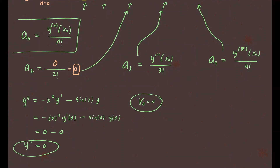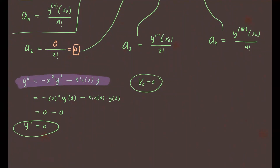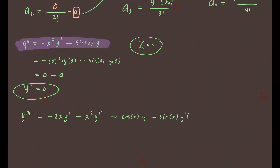We take the expression for y″ and take the next derivative to get the third derivative. Using the product rule on each term: y‴ equals negative 2x·y′ minus x²·y″, minus cosine(x)·y minus sine(x)·y′. Now we evaluate this at x₀ = 0.